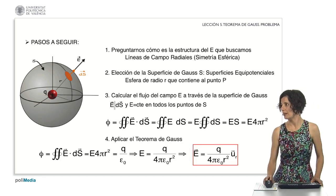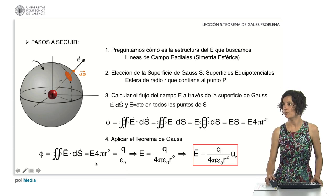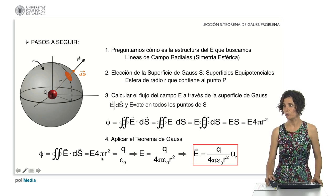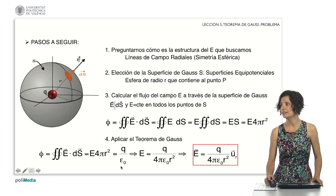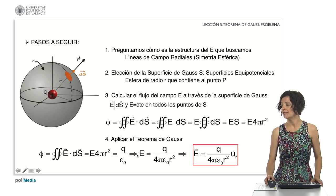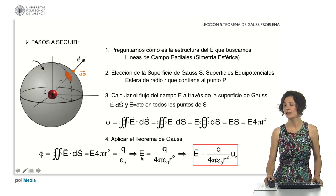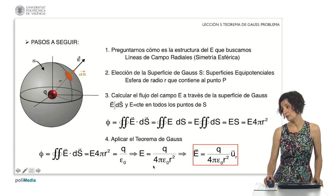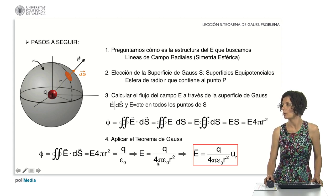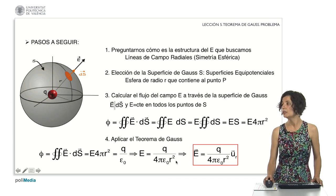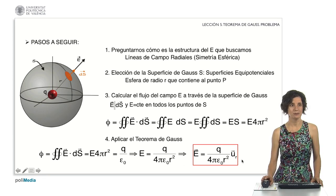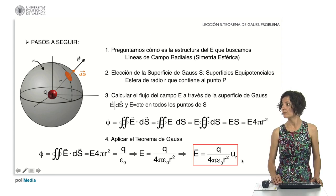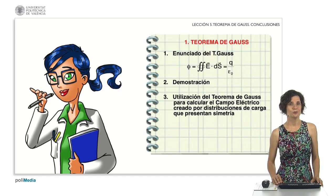Finally, we apply Gauss's law, which tells us that the flux we calculated — E times 4 pi r squared — is equal to the enclosed charge divided by epsilon sub zero. From there, we can solve for the modulus of E, which gives us the well-known expression: q divided by 4 pi epsilon sub zero r squared. Multiplying by the unit vector u sub r gives it vector character. And that's all — thank you very much for your attention, and until the next class.